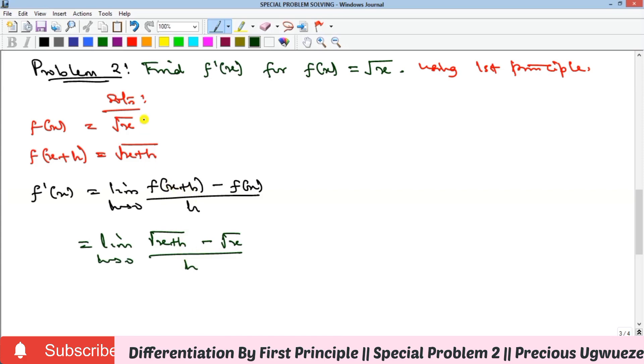Whenever you have limits containing roots, especially in the numerator or denominator, all you need to do is multiply by the conjugate. The conjugate here is √(x + h) + √x. You divide by the same thing.